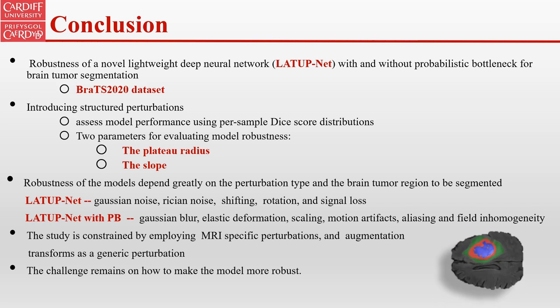To conclude, our research evaluates the robustness of our proposed Lite-Net model for brain tumor segmentation with and without a probabilistic bottleneck on the BRATS 2020 dataset. We introduced structural perturbations and assessed model performance through per-sample Dice score distribution. Our findings revealed a robustness plateau radius followed by a linear decline in performance, providing two effective metrics for comparing robustness. We discovered significant variations in robustness depending on the type of perturbation: Lite-Net is better suited to withstand noise and geometric transformation, while Lite-Net with a probabilistic bottleneck is more effective against perturbations that affect image quality and introduce spatial inconsistencies. The ongoing challenge is to further enhance the robustness of these models.